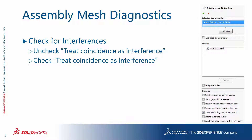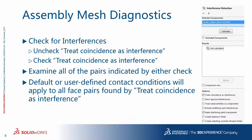When you run into issues meshing an assembly, make sure to use the powerful solid box functionality of interference detection. First, uncheck 'treat coincidence as interference' and calculate — make sure there are no actual interferences. After that, check 'treat coincidence as interference' and calculate again. That will show you the actual faces that are touching. Are they supposed to touch? Also, are there any other pairs of surfaces that should be touching but actually have a gap in the CAD model? Thoroughly examine all of the pairs indicated by either check. Default contact conditions will apply to all face pairs found by 'treat coincidence as interference.'